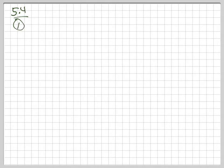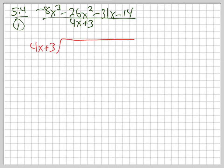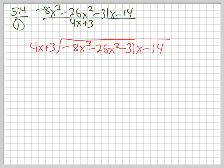Let's get to the actual question. In section 5.4, question number 1, they give us: negative 8x³ minus 26x² minus 31x minus 14, divided by 4x plus 3. A fraction means long division — bottom into top. So we write it as a long division problem: 4x plus 3 into negative 8x³ minus 26x² minus 31x minus 14.